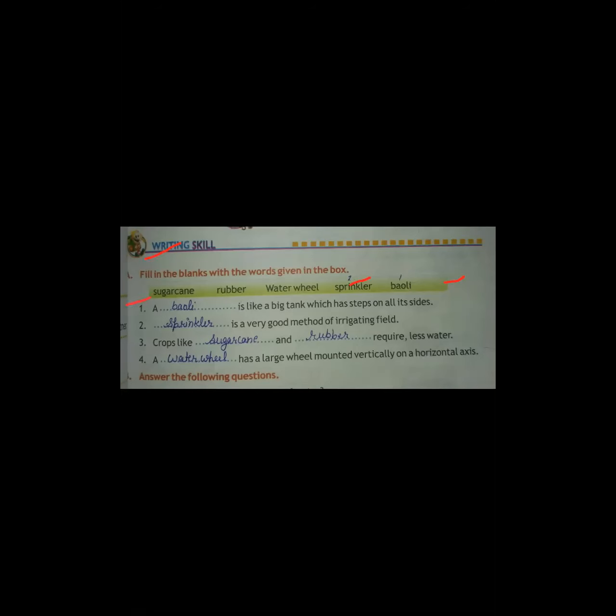Second: blank is a very good method of irrigating fields. The answer is sprinkler. The spelling is S-P-R-I-N-K-L-E-R.